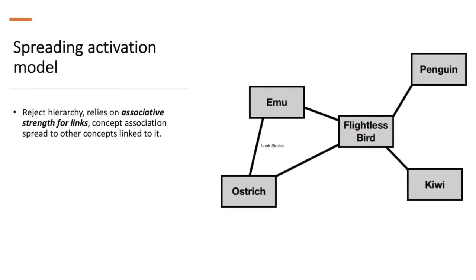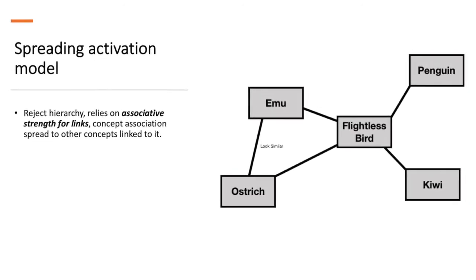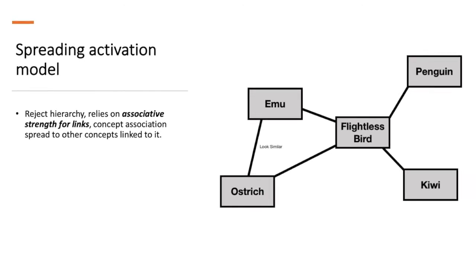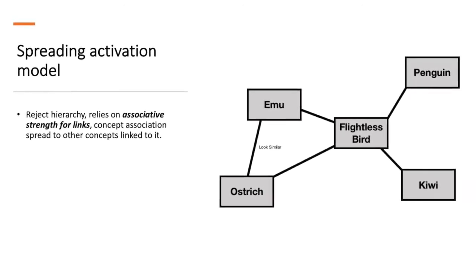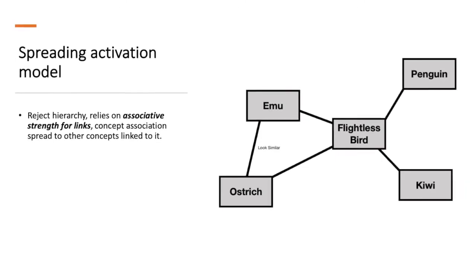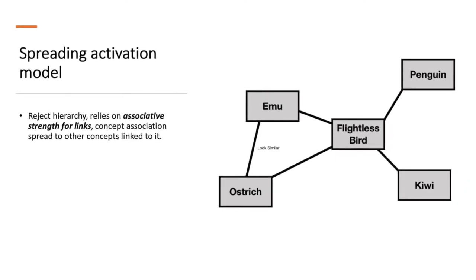For example, in this model I have flightless birds, then I have penguins, kiwis, emus, and ostriches. And emus and ostriches, they would be linked as well because they look very similar to each other, despite one being from Australia and the other being from Africa.